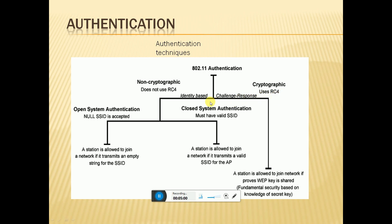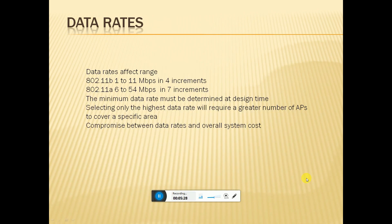Challenge-response identity-based authentication uses open system authentication where any SSID is accepted. Closed system authentication requires the allied SSID — the station is allowed to join the network and transmit via the correct SSID. This shared key is fundamental to security-based knowledge and creates encryption keys.